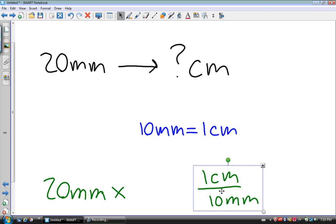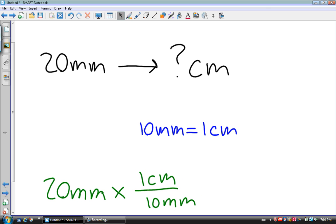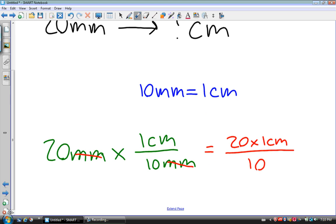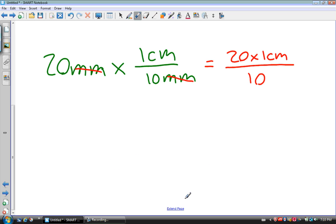I want to have centimeters on top because that's the unit that I want, and the unit that I don't want on the bottom. The reason for that is those units will cancel out, so millimeters would disappear. 20 times 1 over 10 is simply 20 times 1 all divided by 10, which simplifies to 20 centimeters over 10, or 2 centimeters.